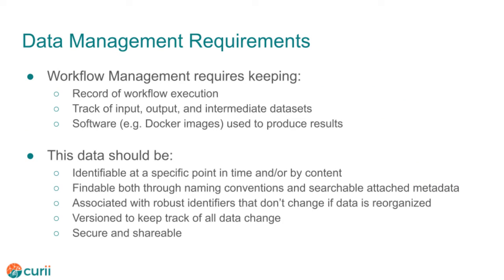Now let's talk about some requirements for good data management for your analysis workflows. We need to precisely identify the datasets and software versions that went into an analysis, keep a record of what computations happened, and connect it to results. We need to identify datasets and software at a point in time by assigning versions. We probably want multiple ways to find data: naming conventions, searchable metadata, and robust identifiers. Robust identifiers are important because they facilitate reorganizing data after the fact, by continuing to point to the same dataset even after it is moved or renamed.